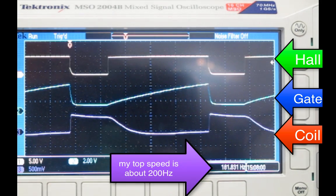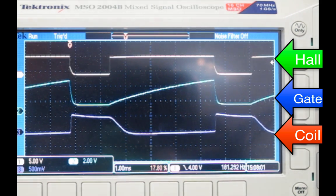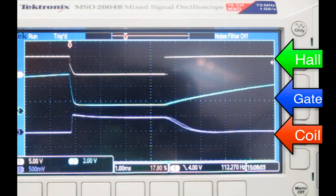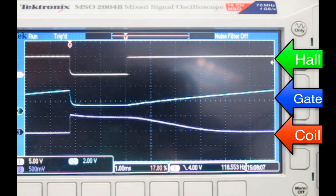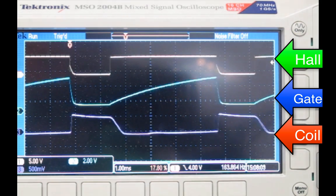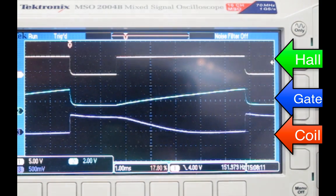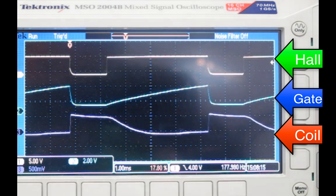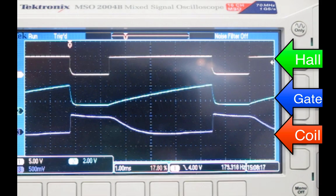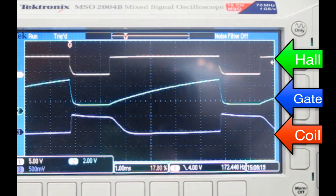The one below that is the signal on the gate of the MOSFET so I can affect the timing by changing the potentiometer position so it takes longer or shorter to charge up the capacitor. And the bottom one is the voltage on the top of the coil that roughly represents the current, the power going through it as well.